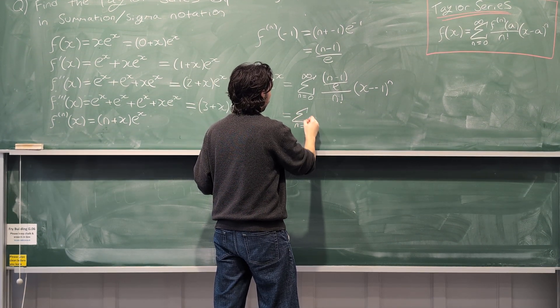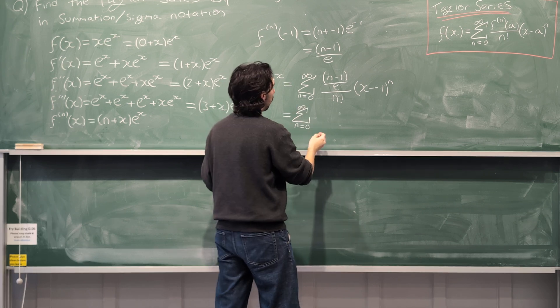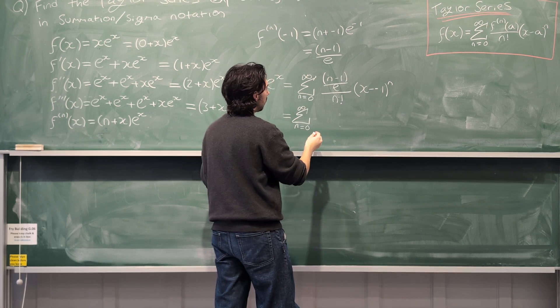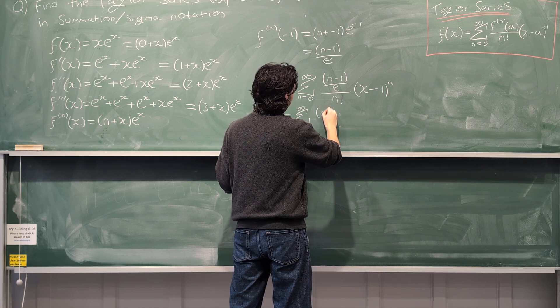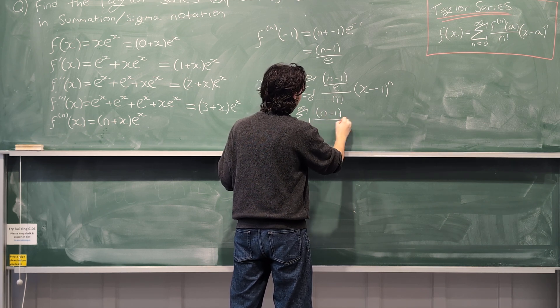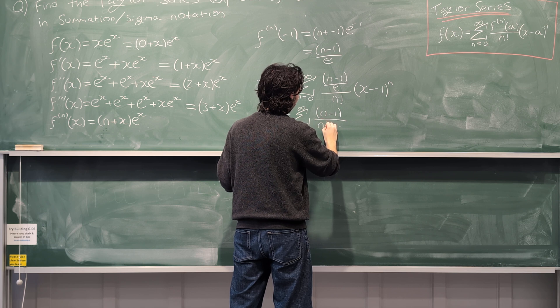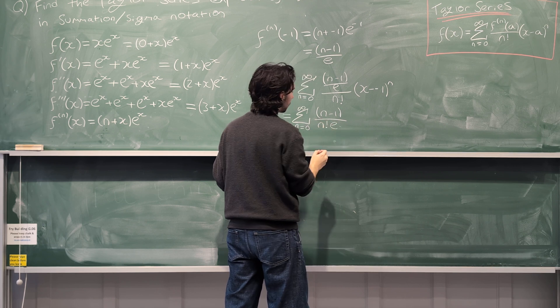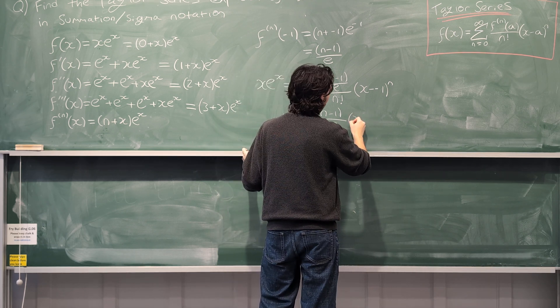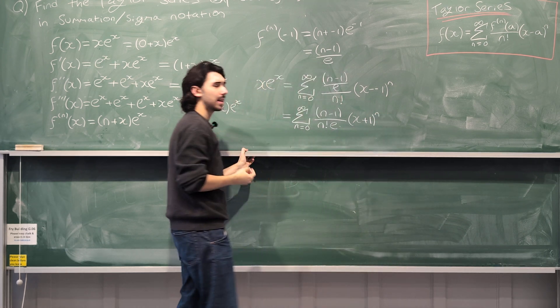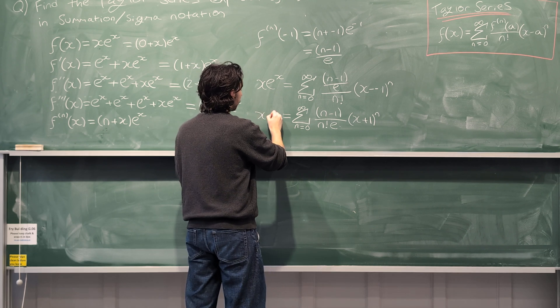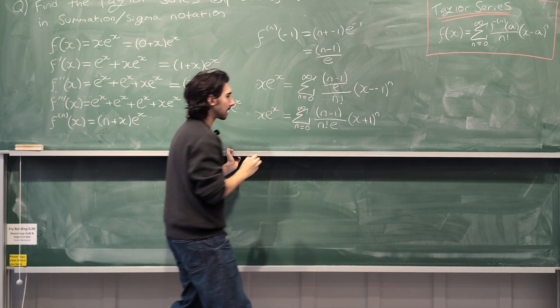So we have the sum from n equals 0 to infinity of, and what can we do right here? Well, let's have a look. We can go (n-1) over (n factorial times e) times (x+1) to the n. And that's probably how I would leave it. And this is xe^x.